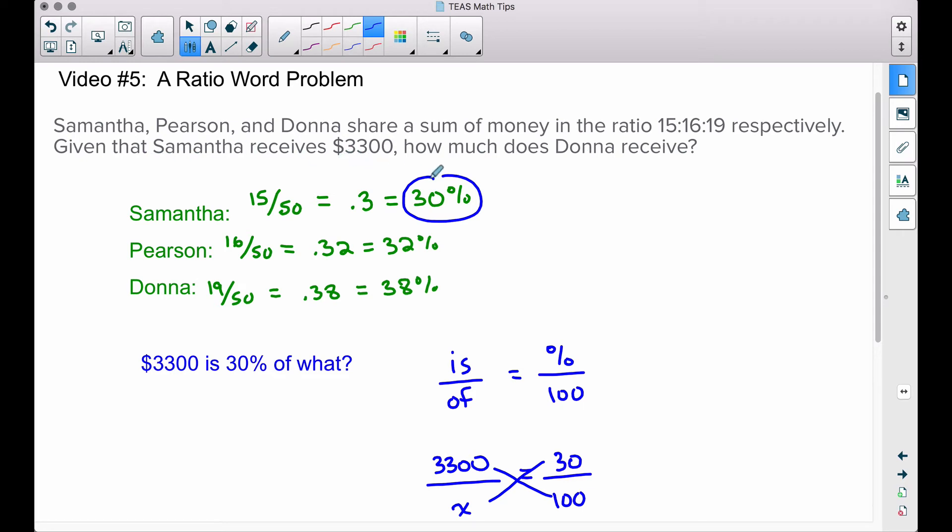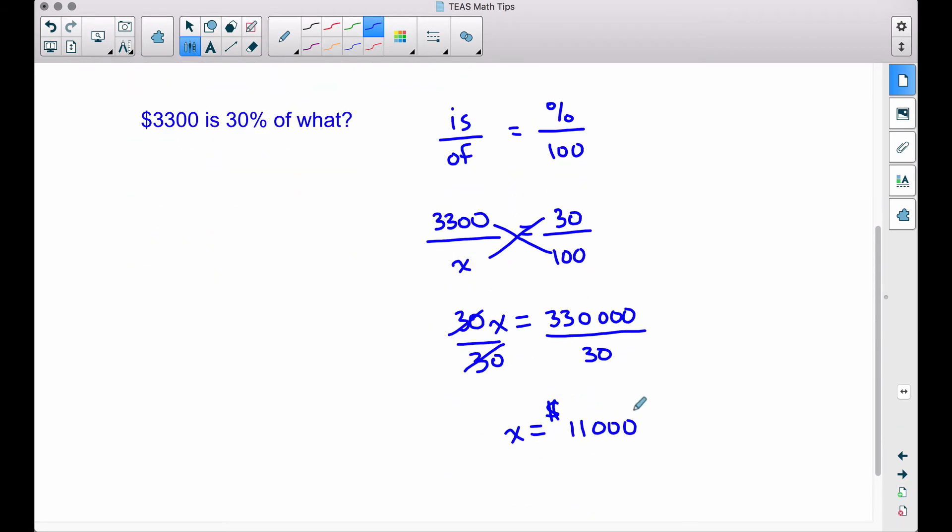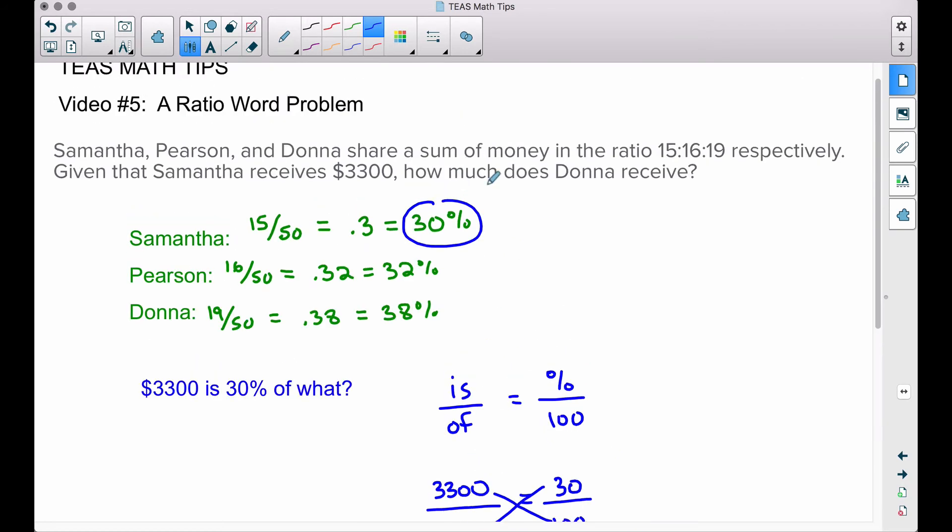Now we don't really need to do anything with Pearson because we know how much Samantha got. We used that to figure out what was the total amount of money that was dispersed to all three of them, the sum of all those disbursements. And now we want to figure out how much Donna received.